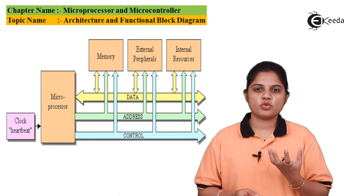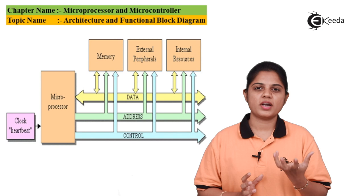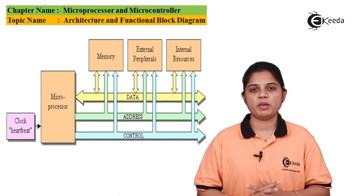Then you have memory. If you are processing data, the data before processing and after processing should be stored somewhere. So for storage, you need memory. You have different memory locations in a microprocessor. These memory locations are known as register arrays or register pairs where we store data.